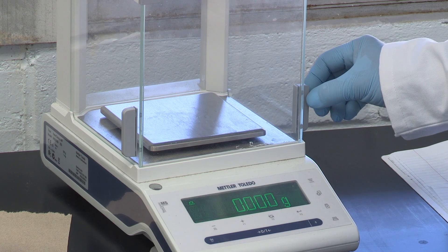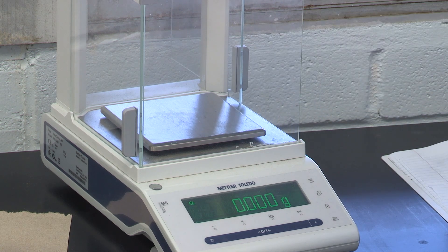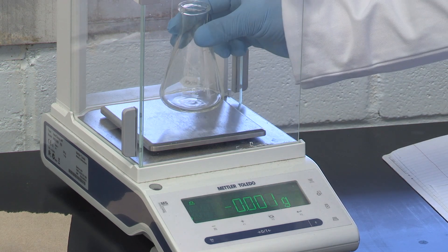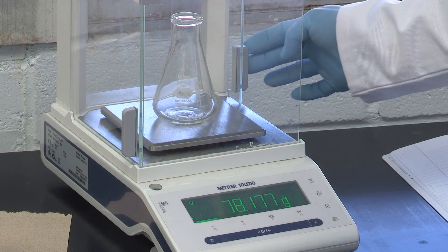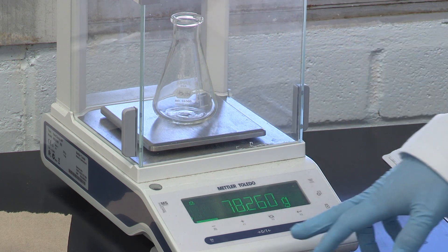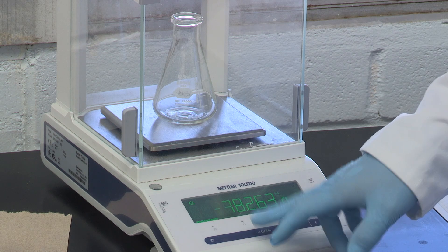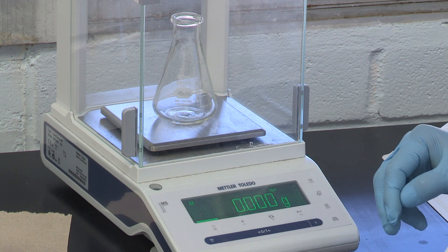Let's open the side door of the electronic balance. We place the Erlenmeyer flask on top of that and then close the door. Make sure we press the button in the center and make sure the reading is about zero.